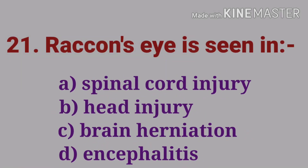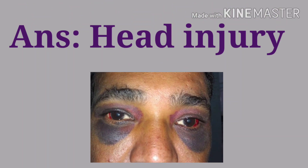Next question: raccoon's eye is seen in — options are spinal cord injury, head injury, brain herniation, and encephalitis. The answer is head injury. Raccoon's eye means periorbital ecchymosis, which is mainly seen in head injury cases.